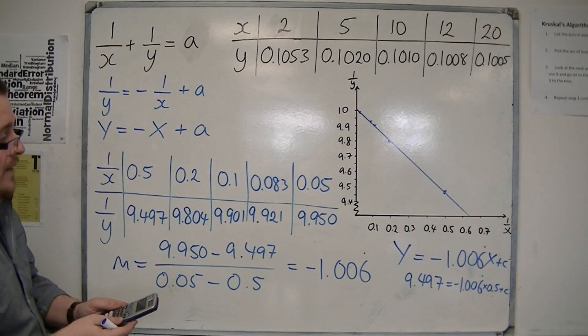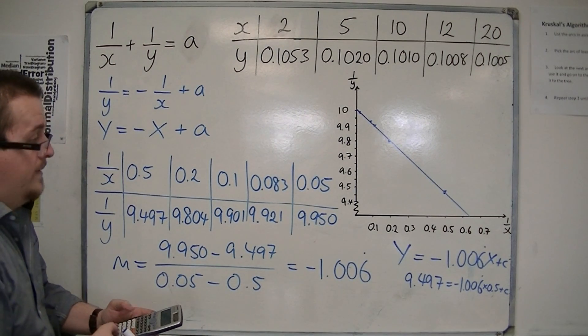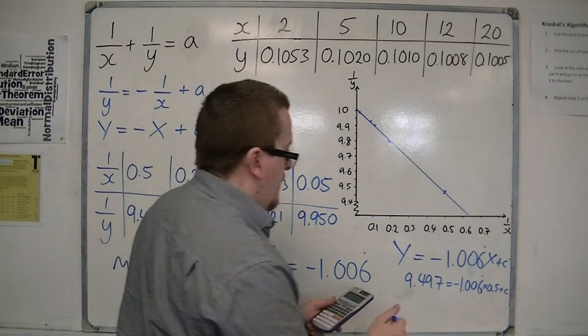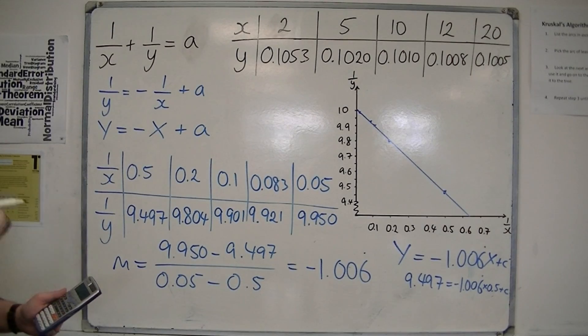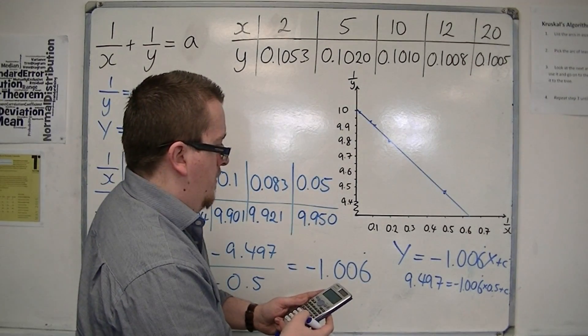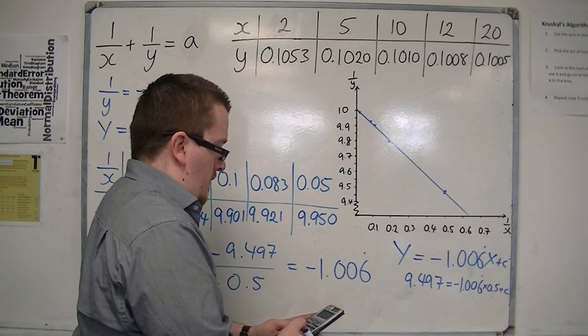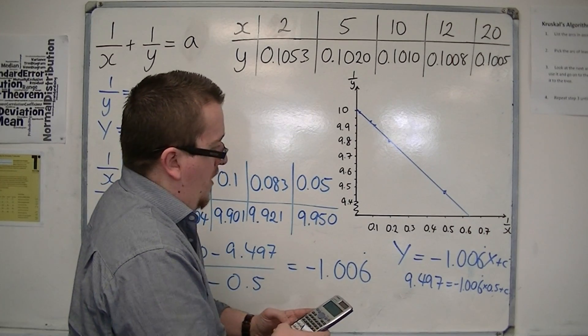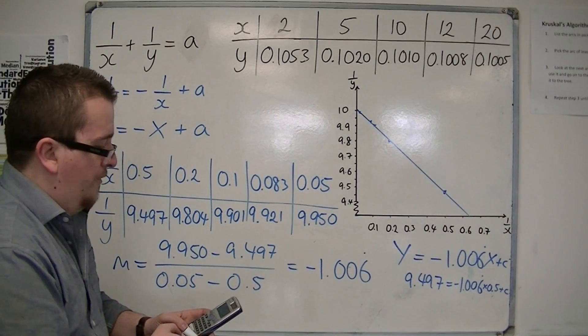So, figuring out what c would have to be. 9.497 plus that times by 0.5. I get a c of 8.99 on that one. Let me just try that again. Yeah, I think I've incorrectly put that in. 9.497 plus 1.006 recurring times 0.5.